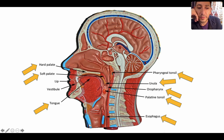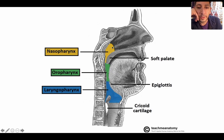Over here we have the adenoids, or you can say the pharyngeal tonsil. Then you have your nasopharynx, your oropharynx, and here's your esophagus back here. This is the palatine tonsil right here. And on another schematic you can see the nasopharynx, oropharynx, and laryngopharynx.